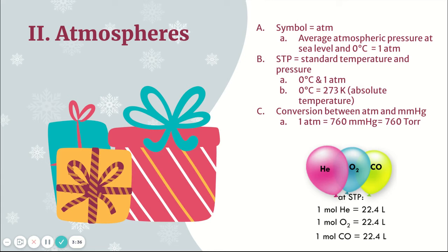As far as moles go: when converting to grams, use the molar mass from the periodic table; when converting to molecules, use Avogadro's number, 6.022 × 10²³; and if you're converting to volume at STP, the constant is 22.4 liters per mole — a number you should know.